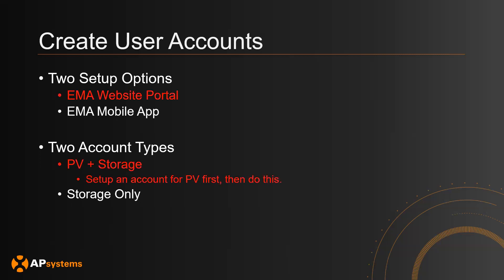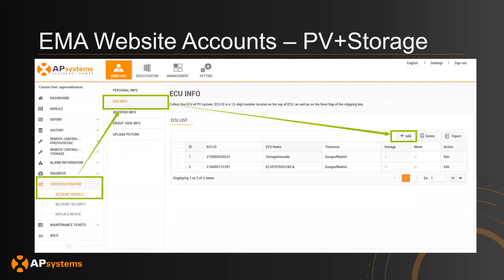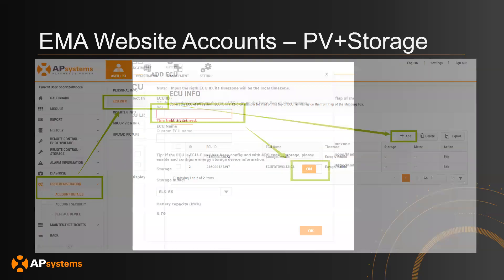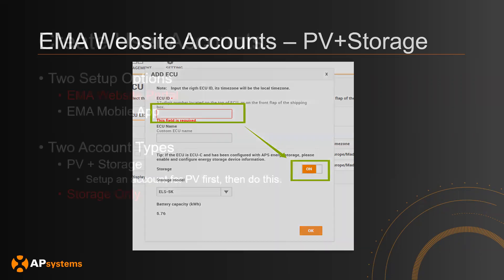Let's look at the first option: the EMA website for setting up PV and storage. Once you've completed the PV project setup, go to the user project, hit User Registration, Account Details, ECU Info, and then click Add. At the Add screen, enter the ECU ID collected from the PCS. The ECU name is optional, but critically, you must hit the slider to indicate this is a storage device. Then click OK and you're done.